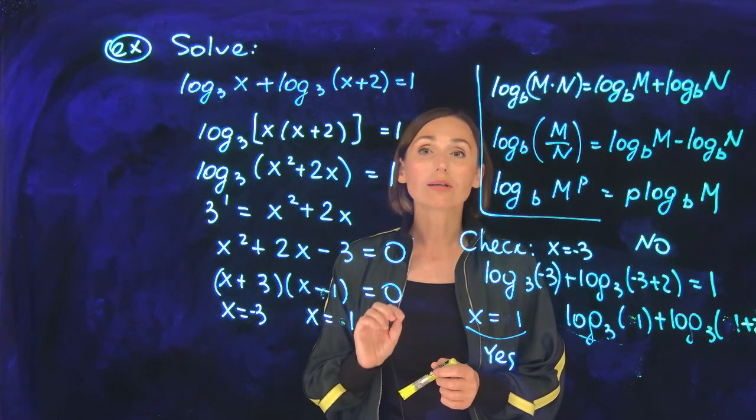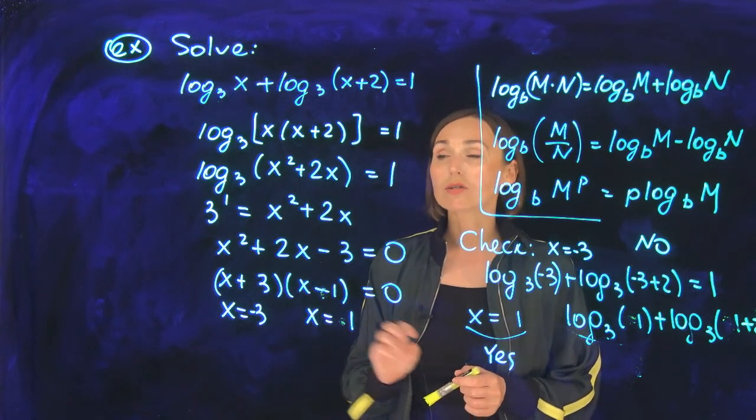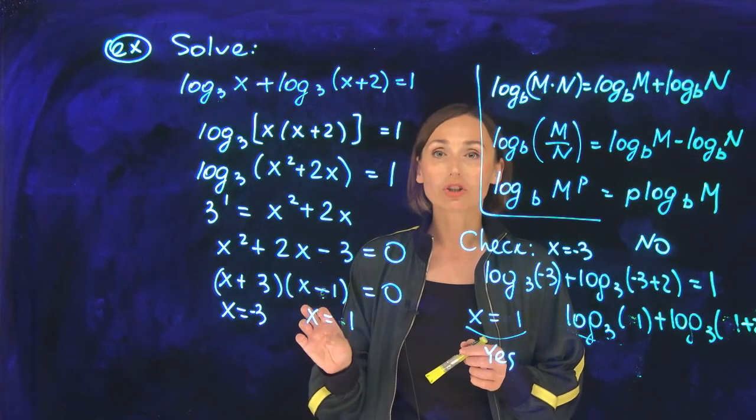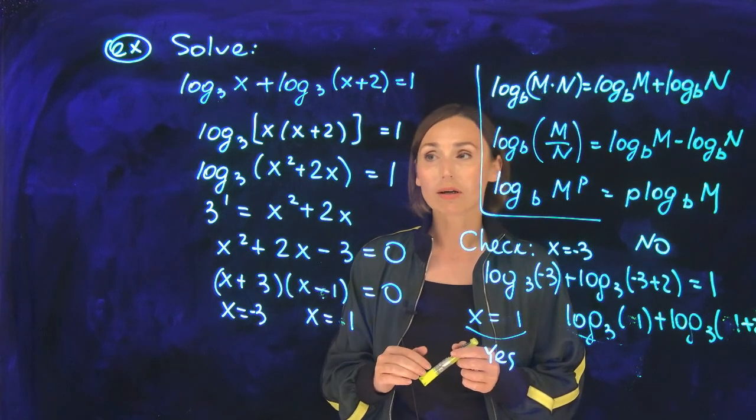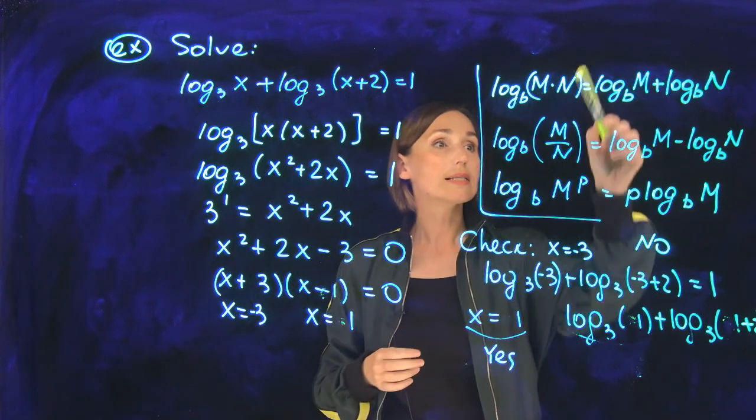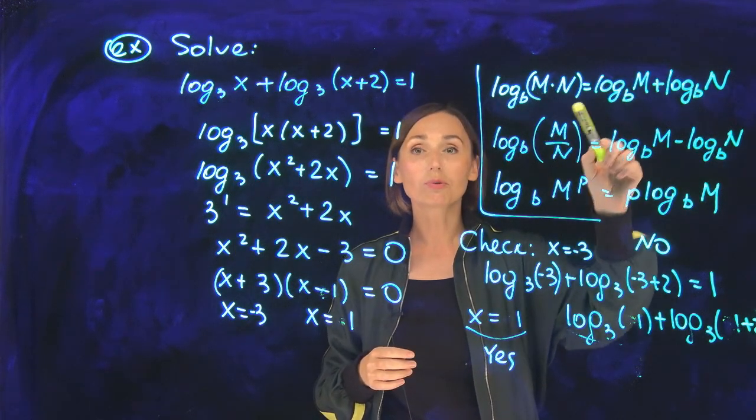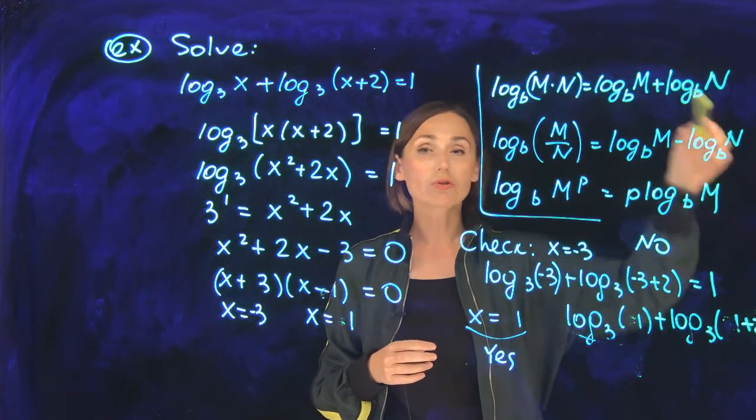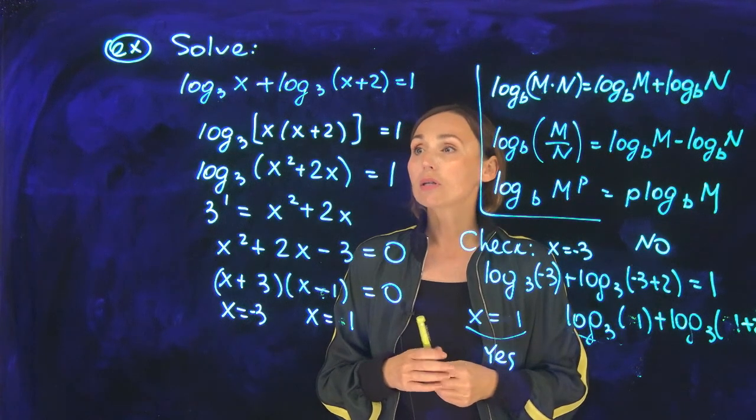First, our goal is to get a single log function on the left and a number on the right. How do we get a single log from the sum of logs? The sum of logs is the logarithm of the product. We have properties here to double check with the solution.